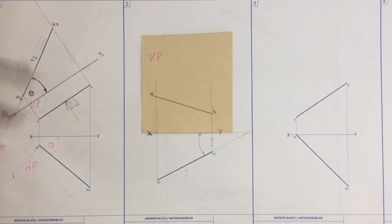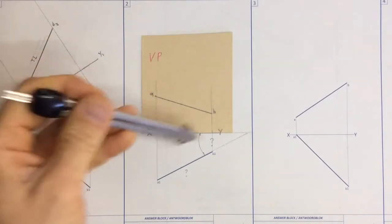What we're going to be looking at here is getting the true length and true inclination of this line segment AB.